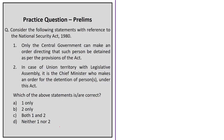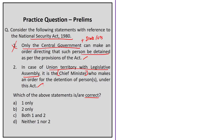Another question on the National Security Act 1980: Statement one says only the central government can make an order directing that a person be detained. This is wrong — both the central government and state governments, as well as union territories, can make such orders under this act. Statement two says that in case of a union territory with a legislative assembly, it is the chief minister who makes an order for detention. This is also wrong — for any union territory, whether with a legislative assembly or without, it is the administrator or lieutenant governor of that union territory who makes the order under this act.